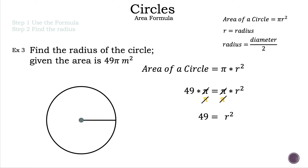Since we have r squared and not r, we need to eliminate the square by taking the square root — the inverse operation. Taking the square root of a square leaves just r. We then take the square root of 49 on the left side, which gives plus or minus 7, meaning 7 and negative 7. However, negative 7 doesn't work because you can't have a negative measurement, so the radius is 7 meters when the area is 49 pi.